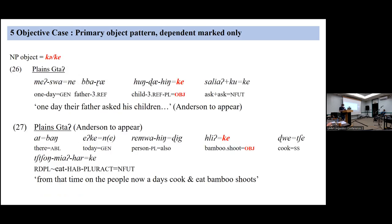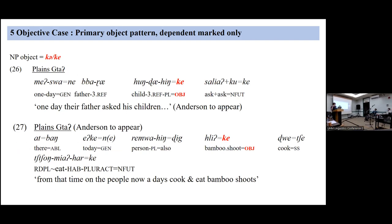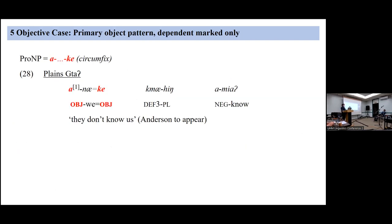If we look at Plains Gutob, we see a slightly different system. Here we find this -ke suffix marking objects, for all nominal objects. But pronominal objects have a double-marked prefix and the -ke suffix. So they've basically migrated the -ke — much like we saw in Dray — normalizing the pronoun versus noun distinction. This language decided that -ke should mark objects even for pronouns.